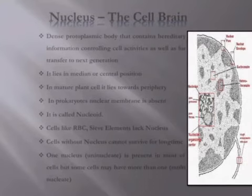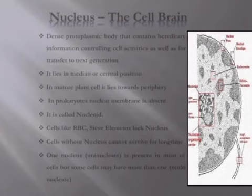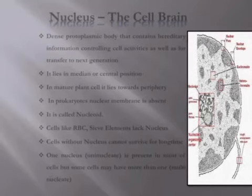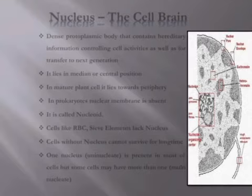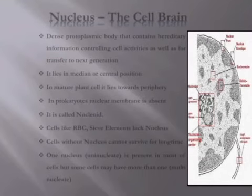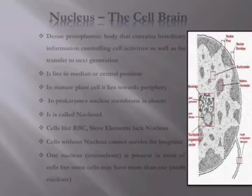تو یہ وہ contain کرتی ہے جو ایک transfer سے دوسری next generation میں transfer ہوتی ہے۔ It lies in a median or central position. In mature plant cells, it lies towards the periphery — بالکل ایک کونے میں۔